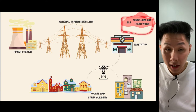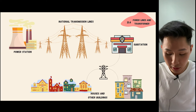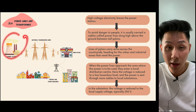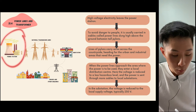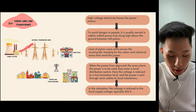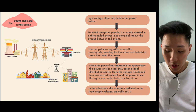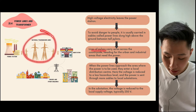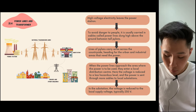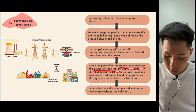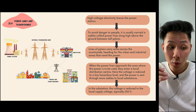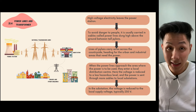Now let's look at power lines and transformers — how we get our electricity today. At the power station (nuclear, hydroelectric, etc.), electricity is generated and transmitted via national transmission lines. To avoid danger to people, it is carried in cables called power lines. Lines of pylons carry wire across the countryside to urban and industrial areas. When power lines approach the area of use, they enter a local distribution centre where voltage is reduced to a less hazardous level.